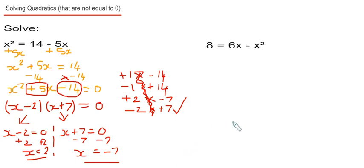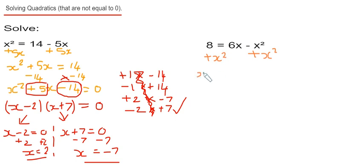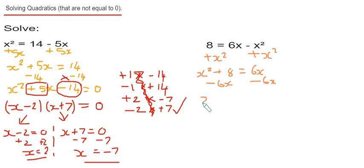Let's move on to the second example. This time we have 8 equals 6x minus x squared. Again, we just need to make it equal to 0. We get rid of the minus x squared by adding x squared to both sides, giving x squared plus 8 equals 6x. Then we minus 6x off both sides, dropping that term in the middle so it's in the correct order.